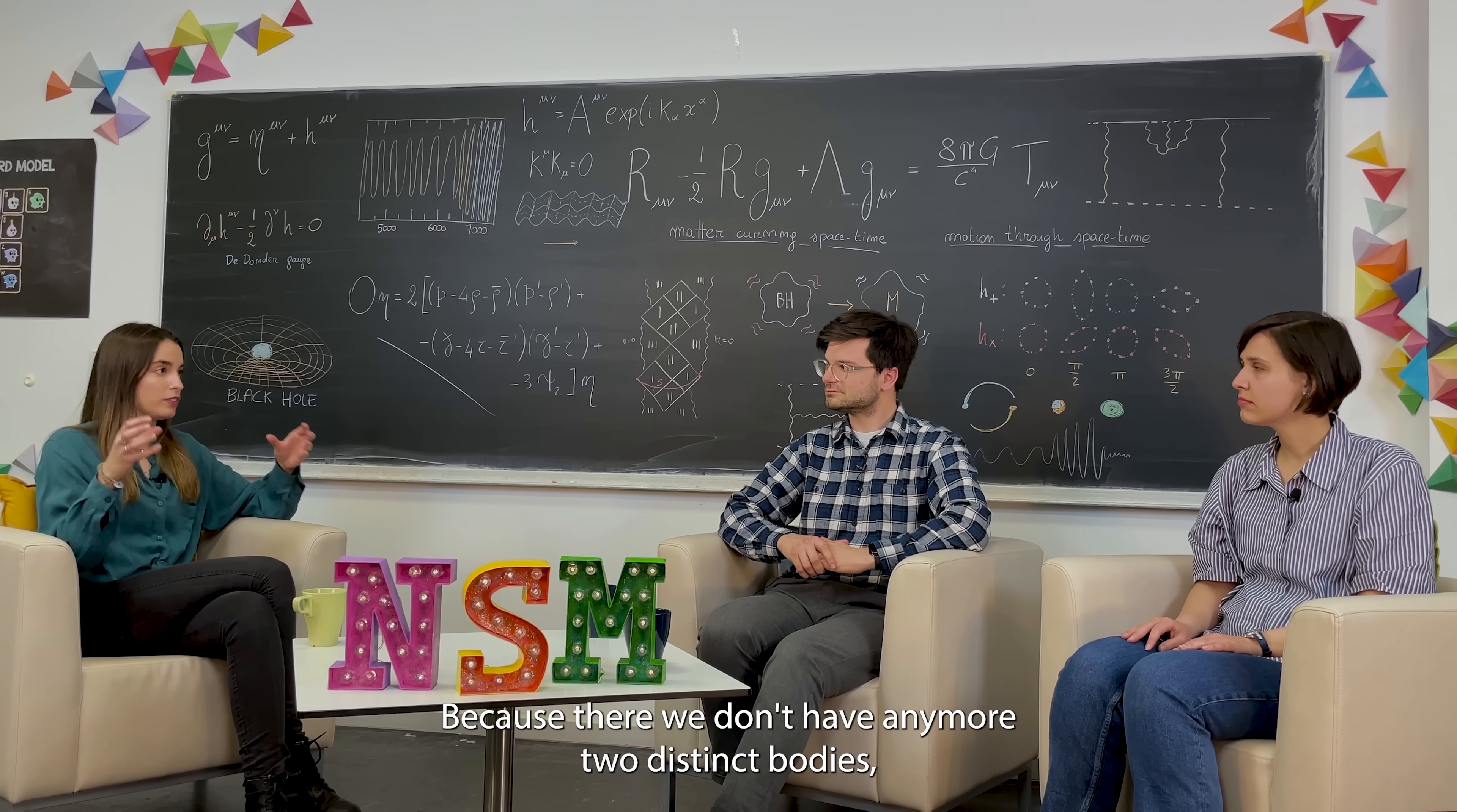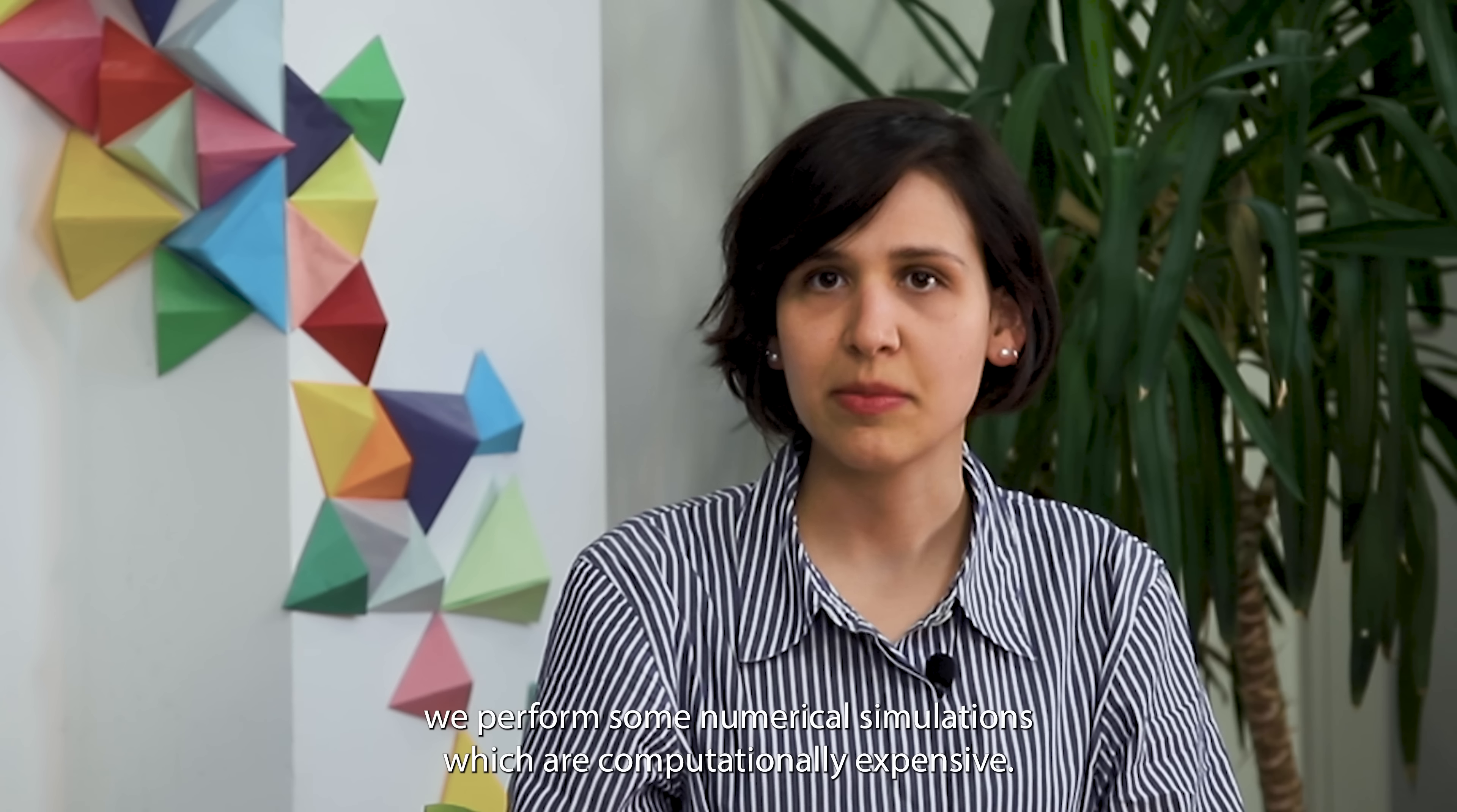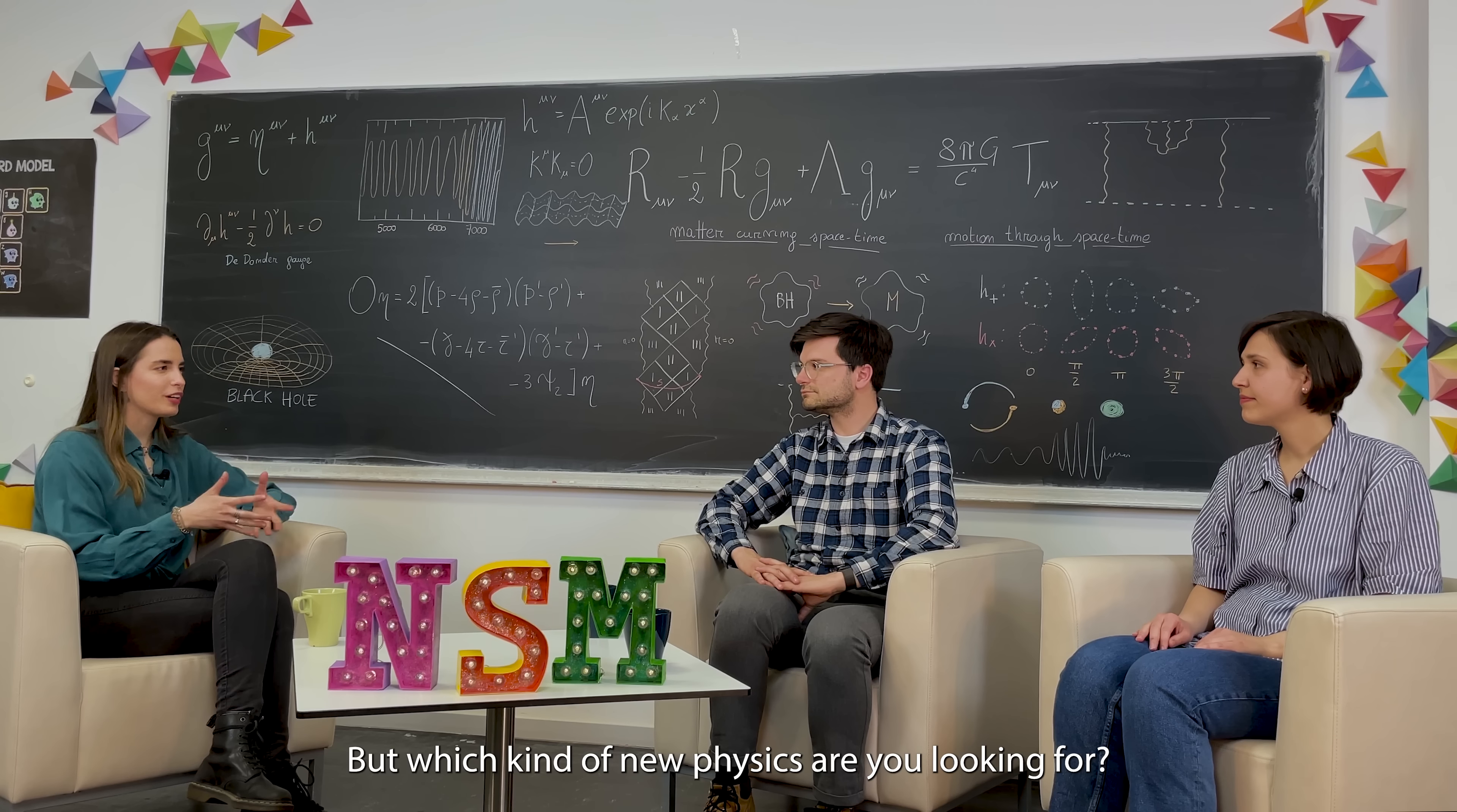So what about afterwards, with the merger and the ringdown? Because there we don't have any more two distinct bodies. So how do we model these stages, Elisa? For the merger, we perform some numerical simulations, which are computationally expensive. And for the ringdown, we take as inputs the parameters from the inspiral, like mass and spin, as described by Gustav before, and we can model the ringdown as a distortion of the spherical shape. And we can also look for new physics in the ringdown stage.